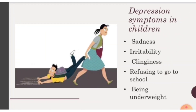For depression symptoms in children, the clinical term is Disruptive Mood Dysregulation Disorder. Children can experience sadness, irritability, clinginess, refusing to go to school, or being underweight. Disruptive mood dysregulation disorder is characterized by severe, recurrent temper outbursts and persistent negative mood for at least one year, beginning before age 10.